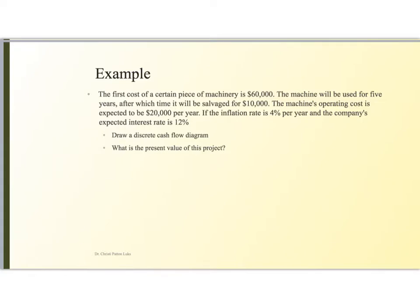Now, let's look at an example. The first cost of a certain piece of machinery is $60,000. And you're going to use this for five years. At the end of that time, you're going to be able to salvage it for $10,000. Each year, you're going to have operating costs of $20,000 every year. We have an inflation rate of 4%, and the company has an expected interest rate of 12%. We want to first draw a discrete cash flow diagram, and then determine what is the present value of this project.